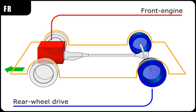Mid-engine, rear-wheel drive. The mid-engine, rear-wheel drive layout, abbreviated as MR layout, is one where the rear wheels are driven by an engine placed just in front of them, behind the passenger compartment. In contrast to the rear-engine RR layout, the center of mass of the engine is in front of the rear axle. This layout is typically chosen for its low moment of inertia and relatively favorable weight distribution.